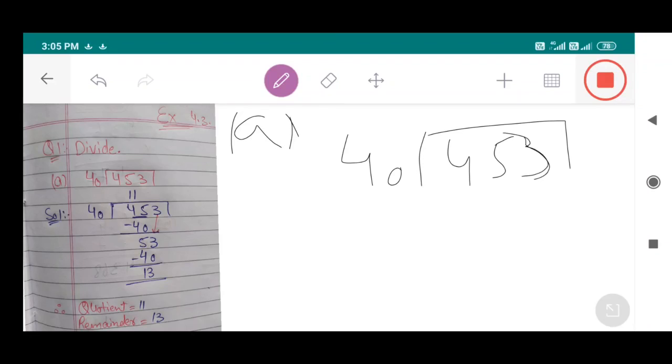We have 453 divided by 40. First we have a two-digit number, 45, and this 45 is greater than 40, so we divide 45 by 40. 40 multiplied by 1 equals 40.